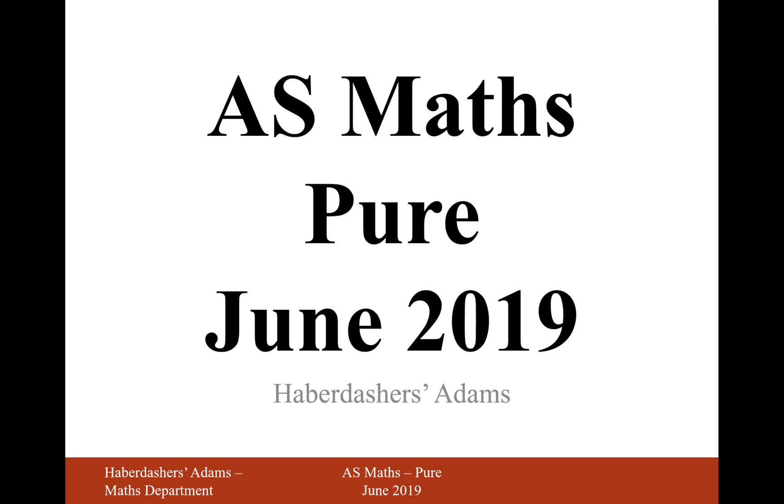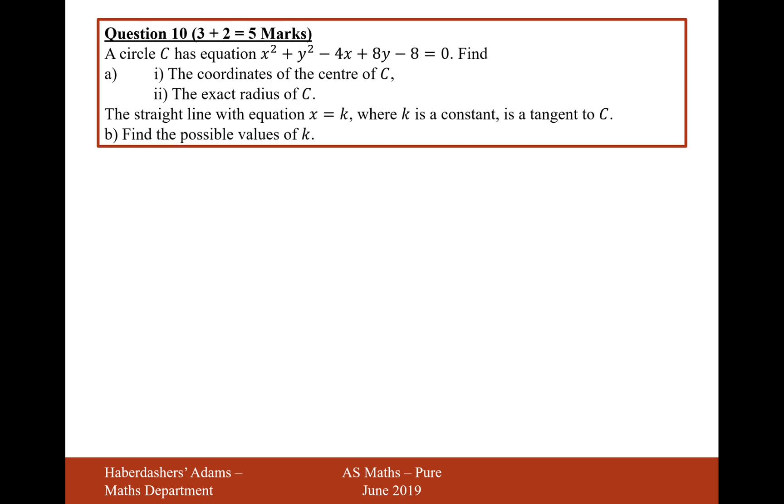Hello there and welcome to the June 2019 paper. Here we're looking at question 10. A circle C has equation x squared plus y squared minus 4x plus 8y minus 8 equals 0. Find the coordinates of the center C and the exact radius of C.